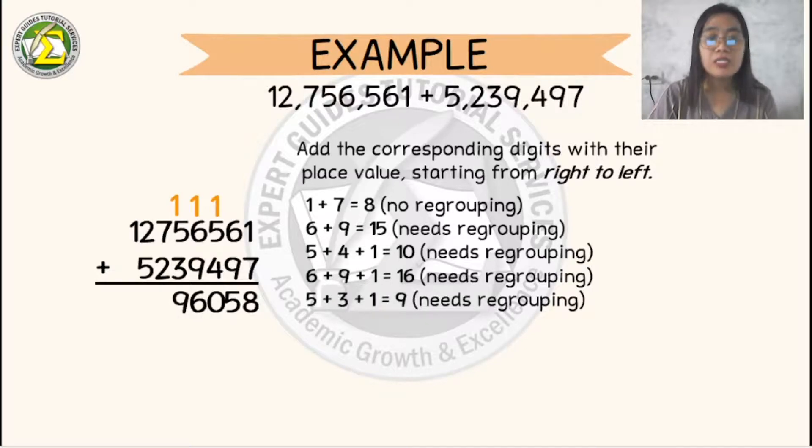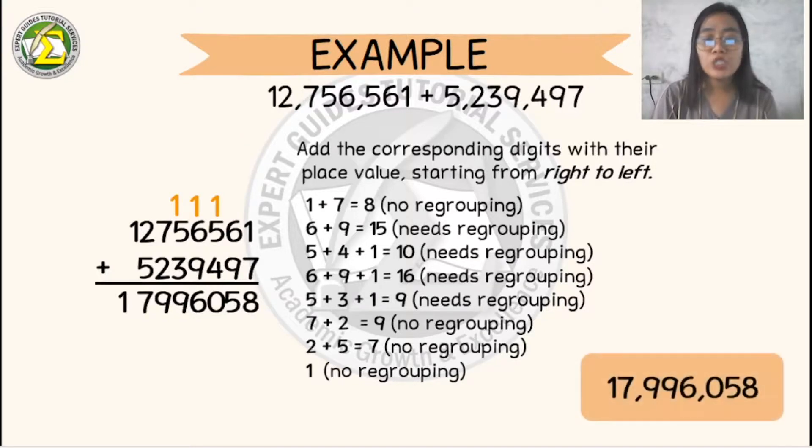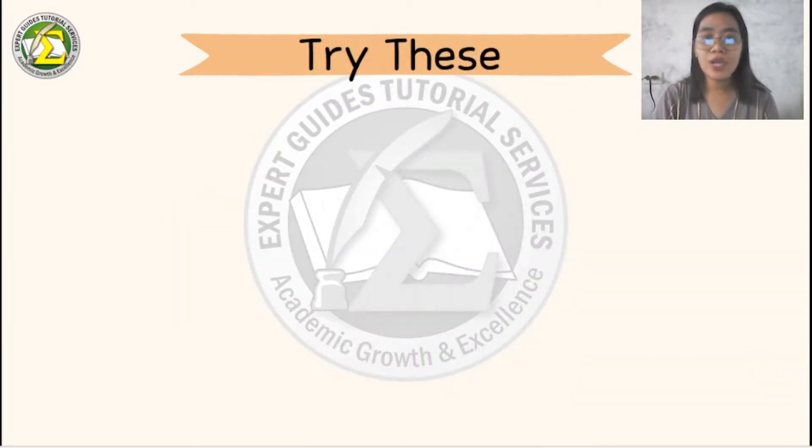So it will become 9. 7 plus 2 is 9, 2 plus 5 will become also 9, and bring the 1. So therefore, our answer will be 17,996,058.